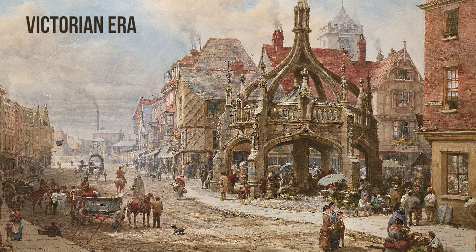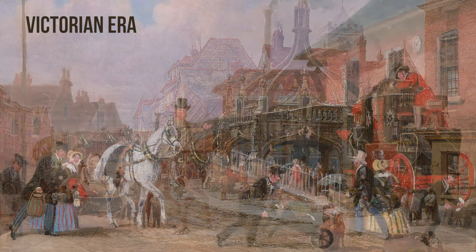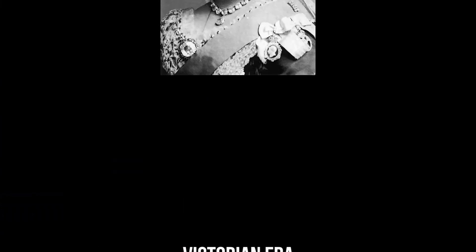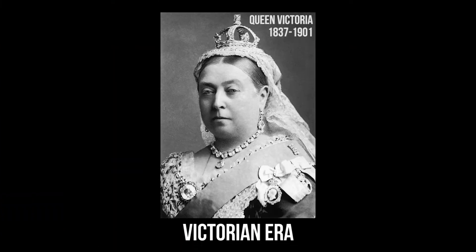Victorian Era. The Victorian Era lasted from the 1830s to the 1900s in the United Kingdom. It was named after Queen Victoria, who reigned from 1837 until she died in 1901.